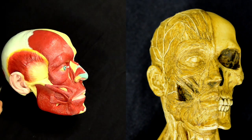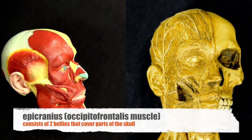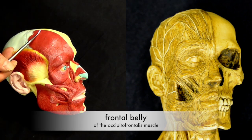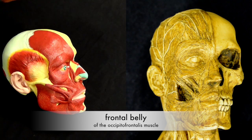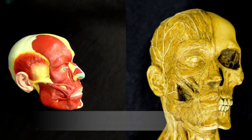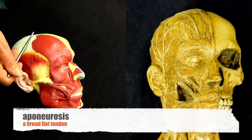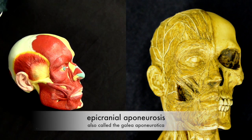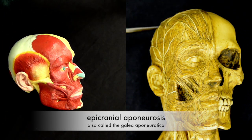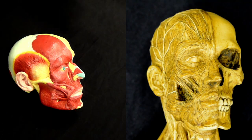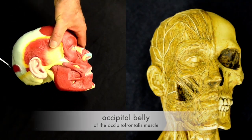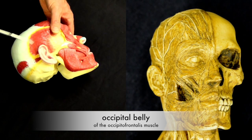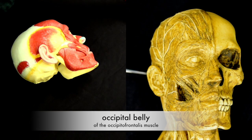Over the top of the head we have the epicranius, and it consists of the frontal belly of the occipitofrontalis, which is here, and on this model it is right here. Then we have an aponeurosis that goes over the top of the head called the epicranial aponeurosis, also called the galea. Then on the back we have the occipital belly of the occipitofrontalis, here and on this model at the back here.